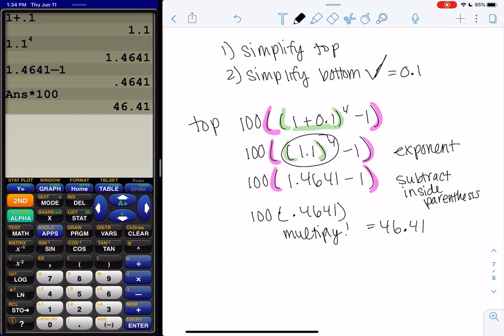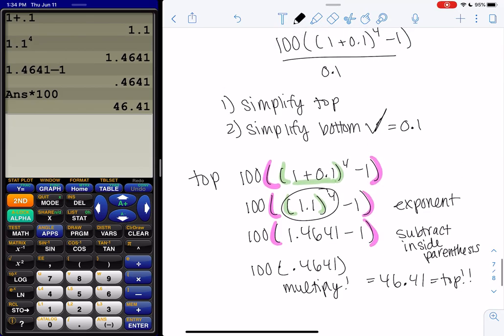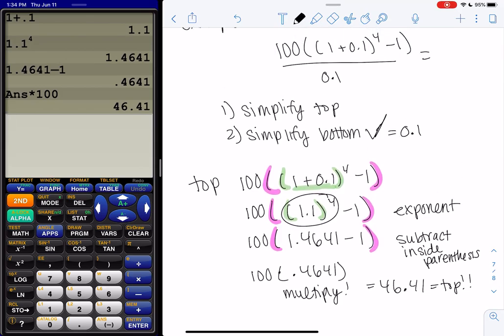And then remember, this was only the top. So we're going to go back to that original equation. We get 46.41 on top and 0.1 on the bottom. And we just divide it. And that is how we simplify this expression.